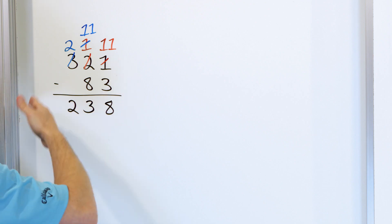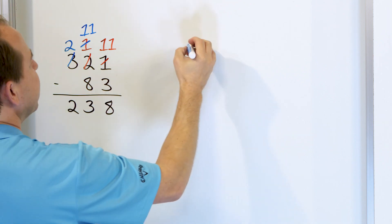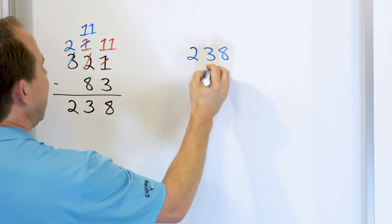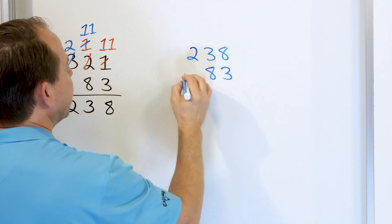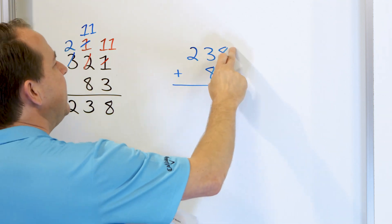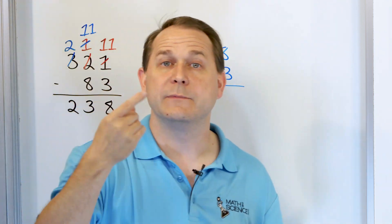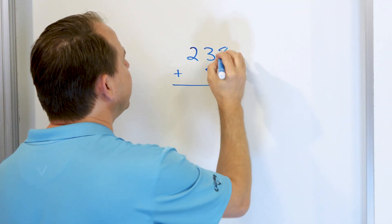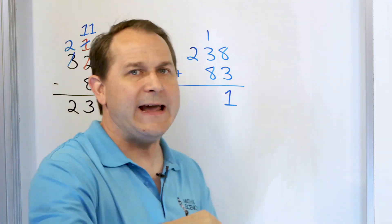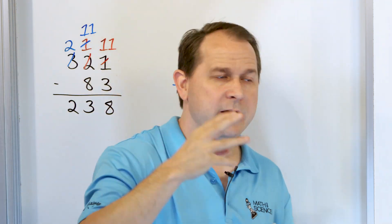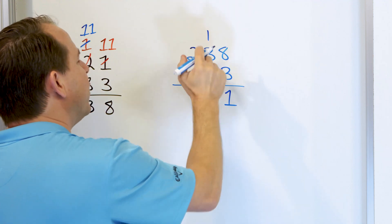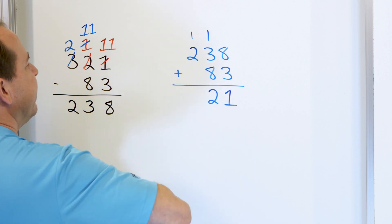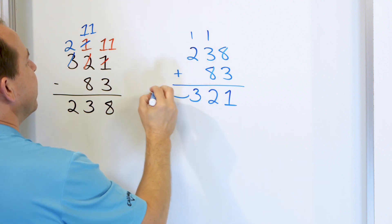So we think the subtraction problem answer is 238. Let's check it by starting with 238 and adding back in the 83 that we subtracted. 8 plus 3: start with 8, go up 9, 10, 11. We land at 11 — that's a two-digit number so we carry. 8 plus 3 again gives us 11, plus 1 more is 12. So we carry the 1, and now we have 2 plus 1 is 3. We get an answer of 321.